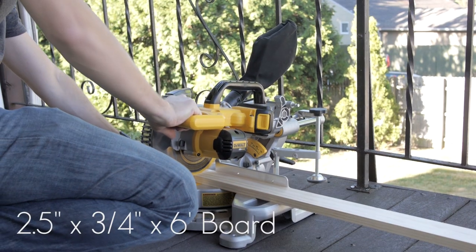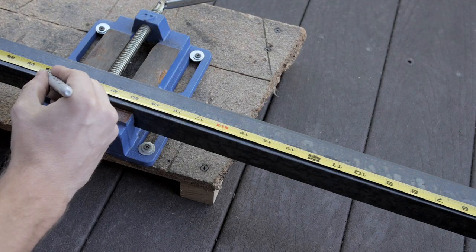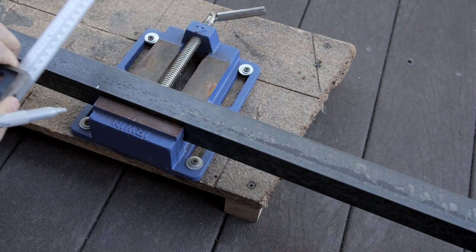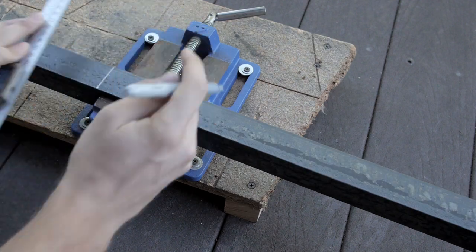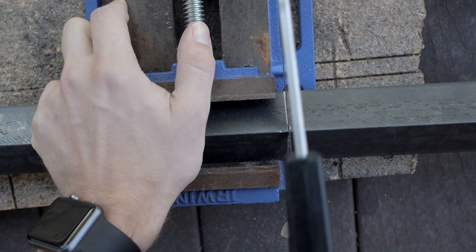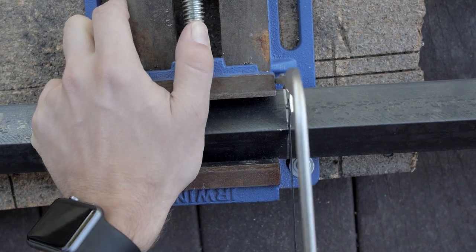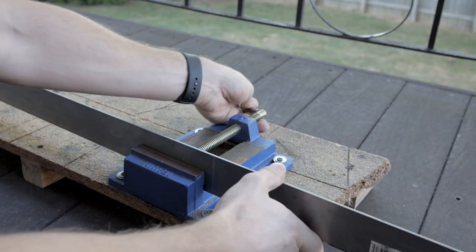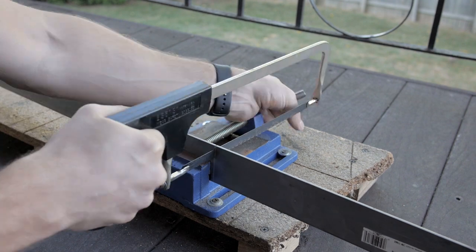I cut this in half to make two 3 foot sections. The angle iron is also cut in half to make two 2 foot sections. I cut a foot off of the flat plate.